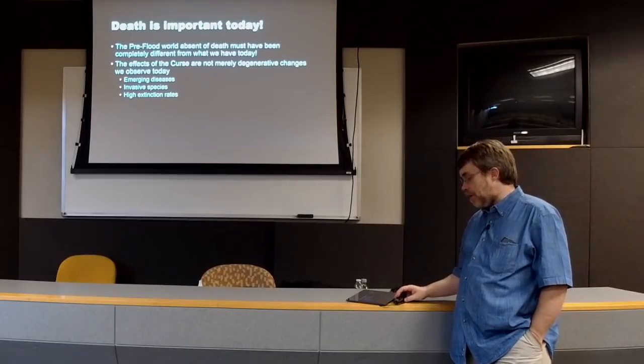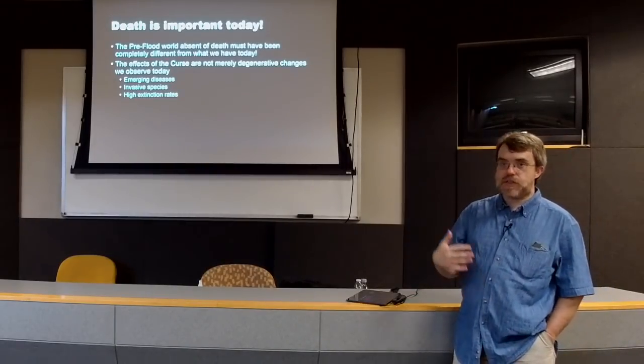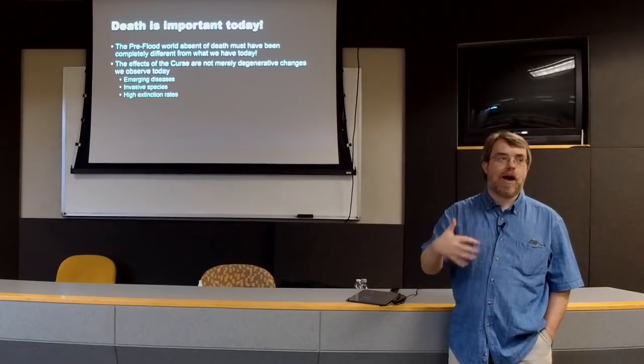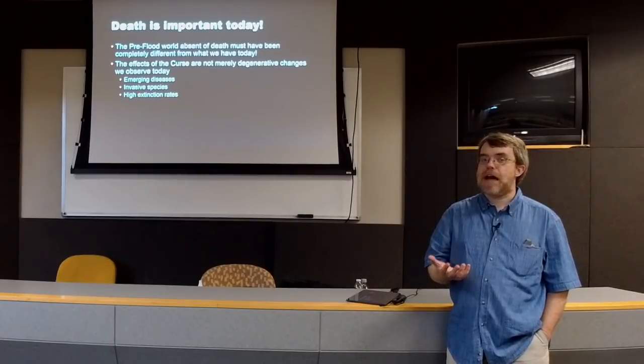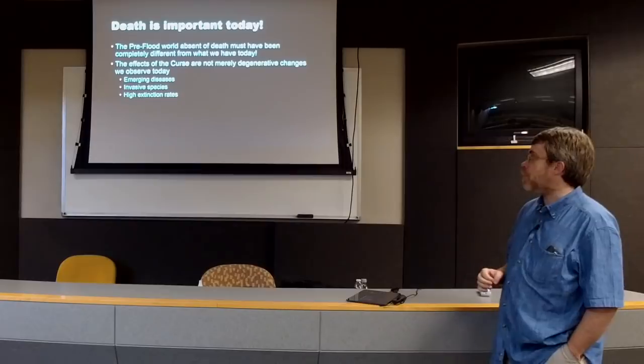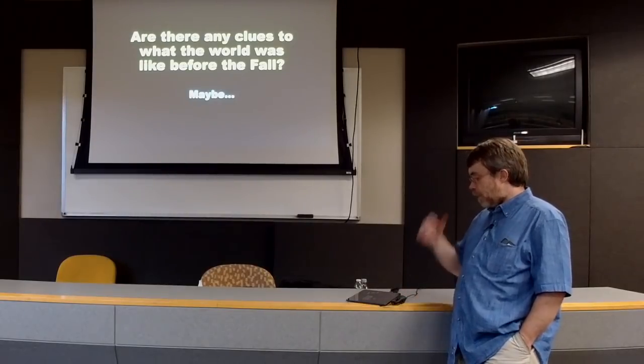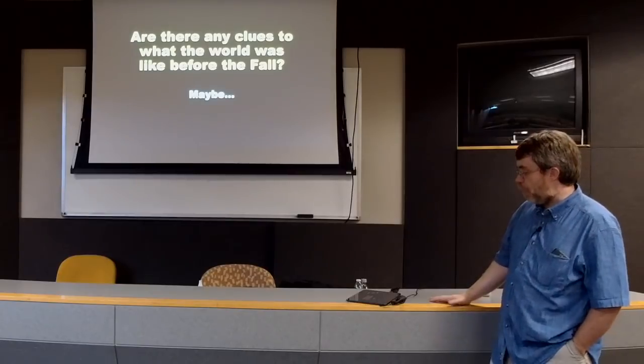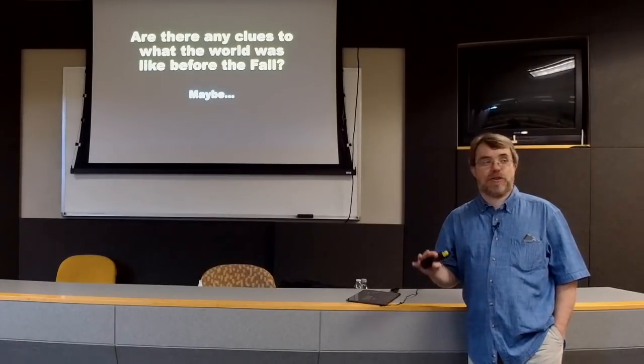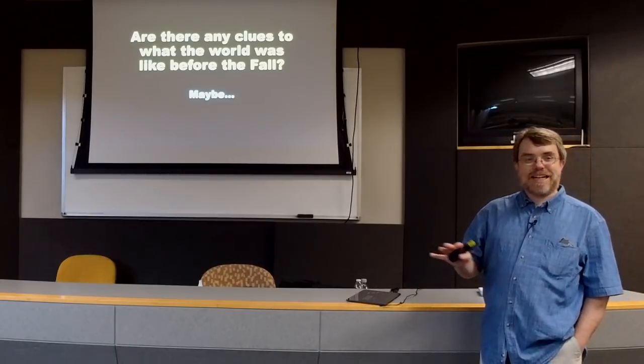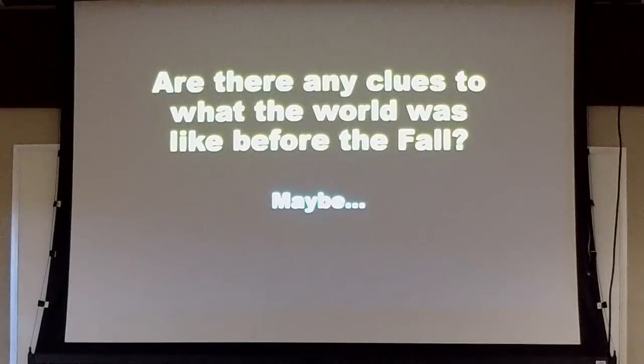So we see around us today degenerative changes, things that we think of as degeneration, emerging diseases and invasive species and high extinction rates. And we think about how creation is gradually, slowly falling apart. And that's true. That's a result of the curse. But that's not the whole story of the curse. We have to remember that the curse involves design as well. Now, are there any clues then to what the world was like before the fall? Well, this is where it gets really dicey. I'm not sure there are. But let me throw out an interesting observation. A guess, really. This is just a guess. Just between you and me. We won't tell anybody else. This is my guess.